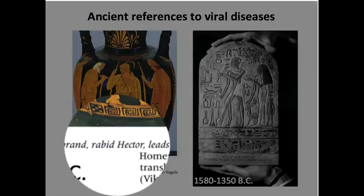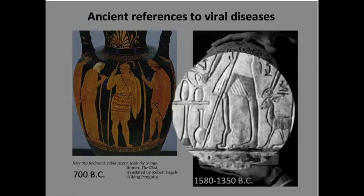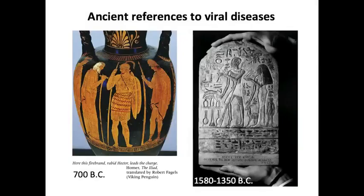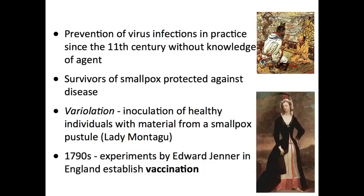Here is an Egyptian stele from 1500 B.C. This individual's leg looks like he's got polio. We can't say if it is or not, of course, but this is a perfect presentation of polio. In the 11th century, the Chinese were immunizing against smallpox.